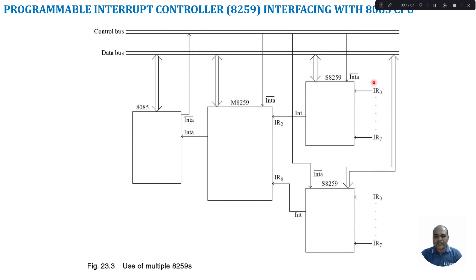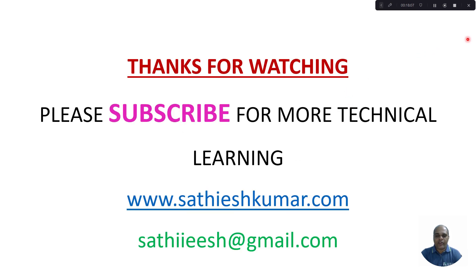This is how we can increase the number of interrupts supported by the 8085 or 8086 microprocessor. In this tutorial, I discussed the Programmable Interrupt Controller 8259 IC, which is especially designed for 8085 and 8086 to increase interrupt handling capability — up to 64 interrupts can be supported. Remember, the 8259's INT output needs to be connected only to the INTR input of the microprocessor — not to TRAP, RST 7.5, 6.5, or 5.5 in 8085, and not to the non-maskable interrupt in 8086. Thanks for watching — please subscribe for more technical learning.